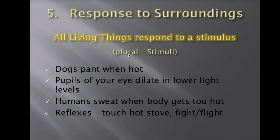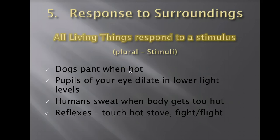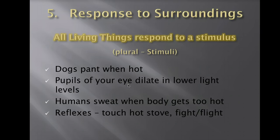The fifth characteristic of life is what we call response to surroundings. All living things are going to respond to their surroundings — what we call stimulus and response. A stimulus is singular; the plural form is what we call stimuli. An example is a dog panting when it's hot: the stimulus is the environment being hot, and the response is the dog panting. Another example: the pupils of your eyes dilate or get larger in lower light — your pupils get larger to allow light in. The stimulus is the lower light, and the pupil dilating is the response.